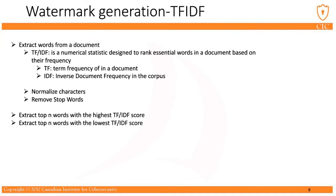Then we remove some stop words from them, and we count the frequency of each word. For selecting words, we have two strategies. First, choosing words with a high TF-IDF score, which are the most important words in the document. And second, selecting words with a low TF-IDF score, which are the least important words in the document.